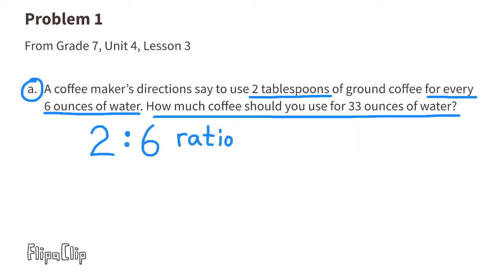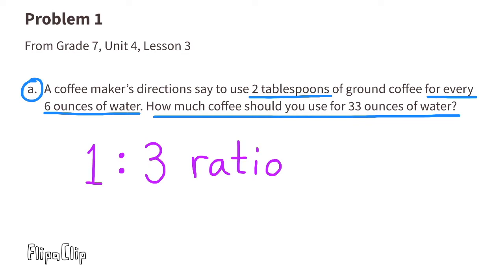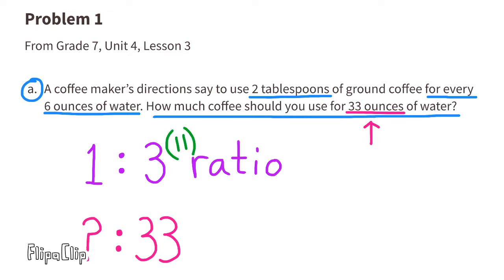Two tablespoons for every six ounces of water is a ratio of two to six. Dividing both by two gives a ratio of one to three — one tablespoon of coffee for every three ounces of water. The question asks how many tablespoons for 33 ounces. 33 divided by 3 is 11, so we multiply both sides by 11. One times 11 is 11, so you'll need 11 tablespoons of coffee for 33 ounces of water.